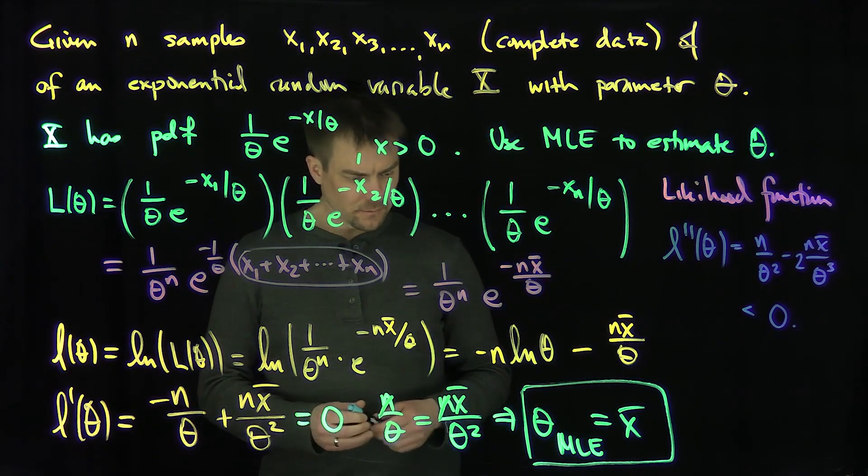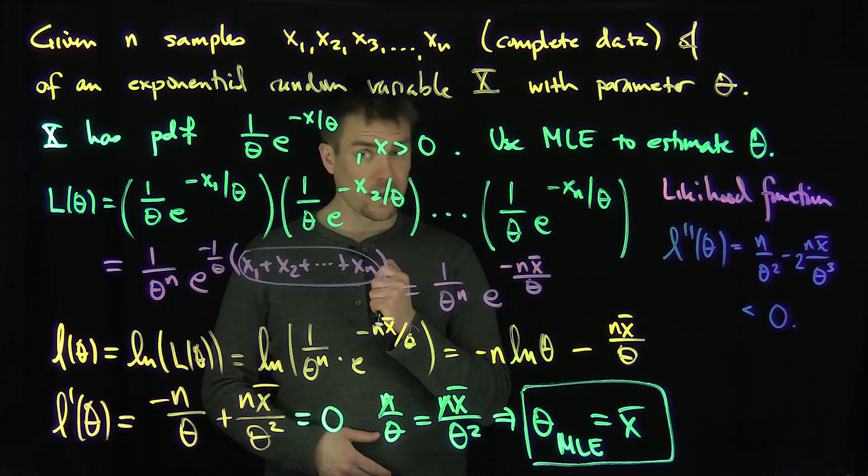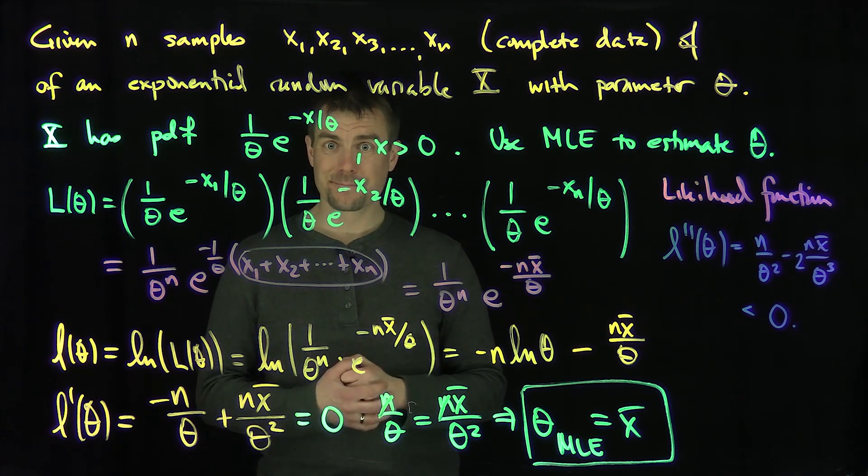And so what we'll see is that for the exponential random variable, our maximum likelihood estimation is just the sample mean. Thank you very much.